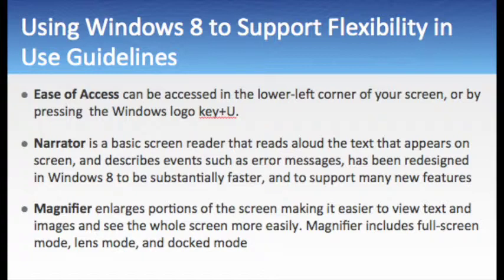Whether you're an individual who is blind, has low vision, or are fully sighted, you will be able to use Windows 8 from the first time you start your device. By default, on touch-only devices, Narrator can be launched by simply holding down the Windows logo button and pressing the volume up button. Once Narrator is running, you can use Narrator's built-in touch commands to explore your screen and control your device.